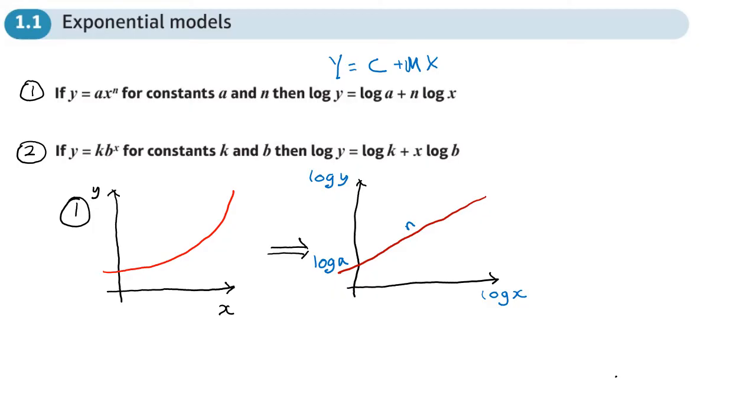On number 2 we start with the same exponential type graph, but there are slight differences. If we look at the information that's there, let's match it up first. You've got y equals mx plus c. That means we have log y here where y would be in y equals mx plus c.